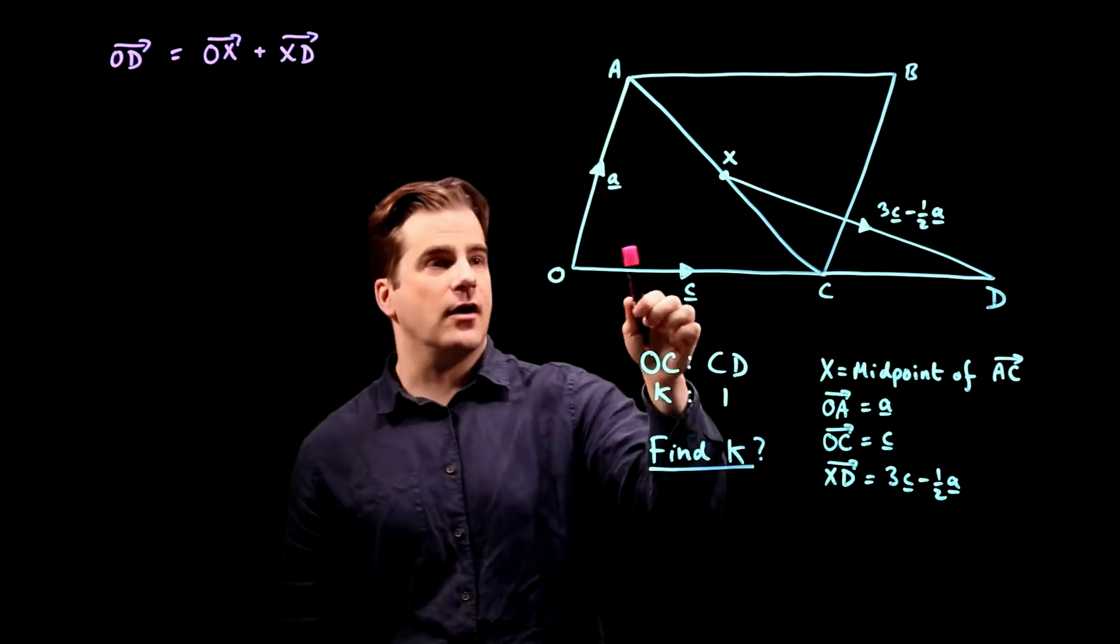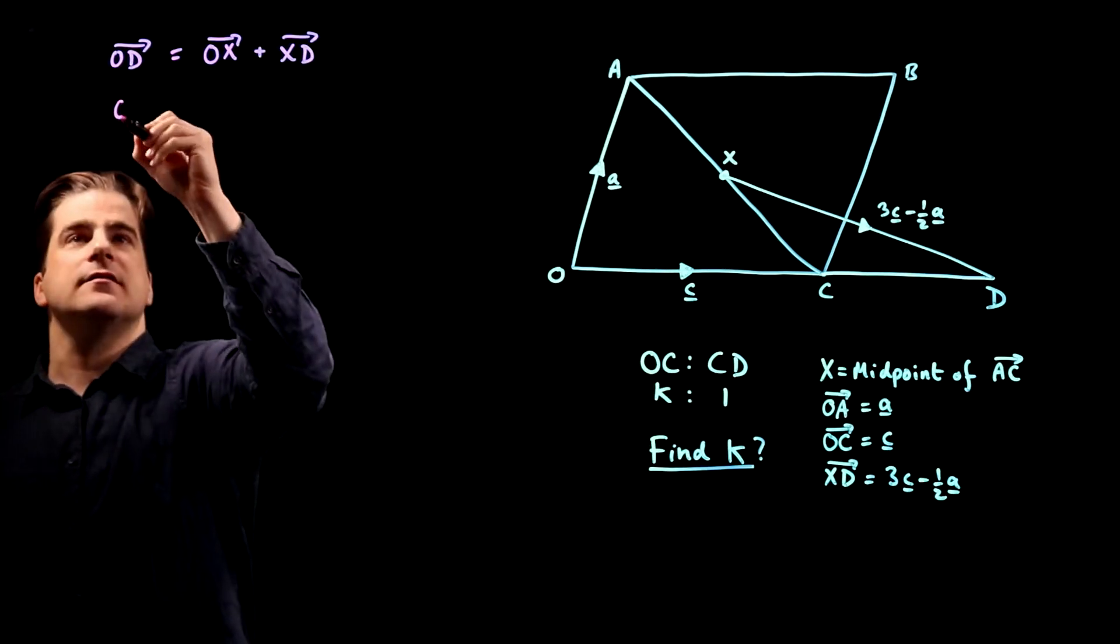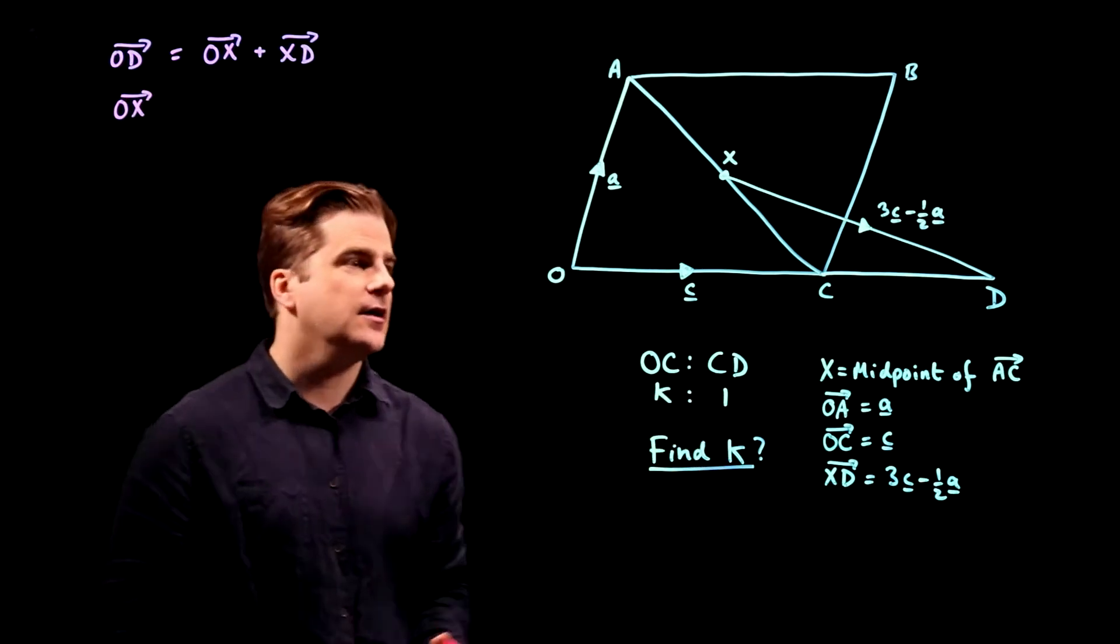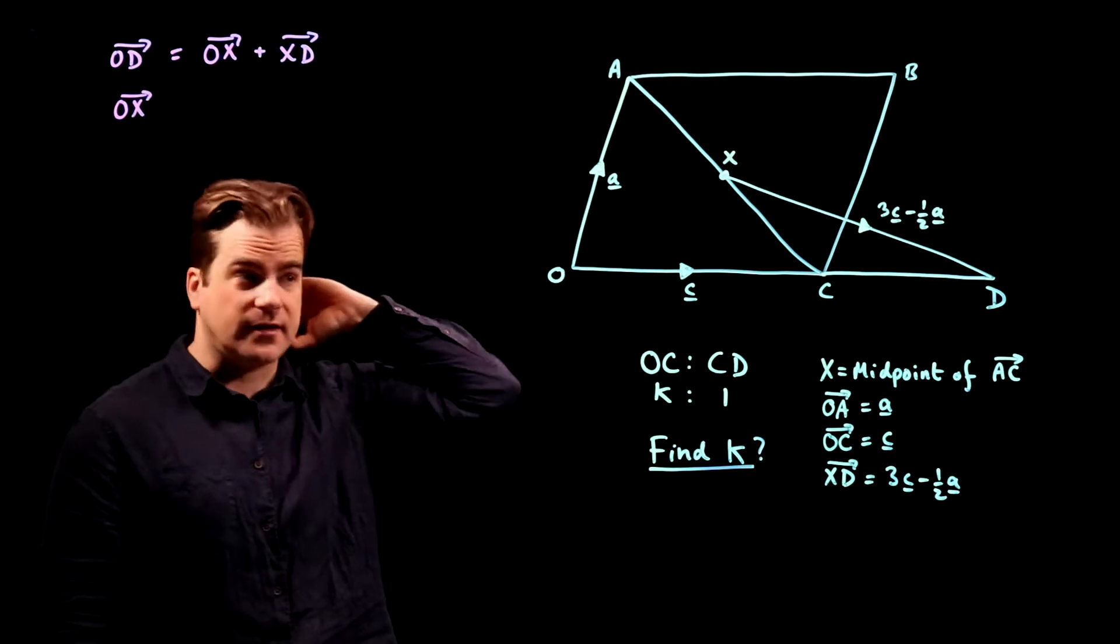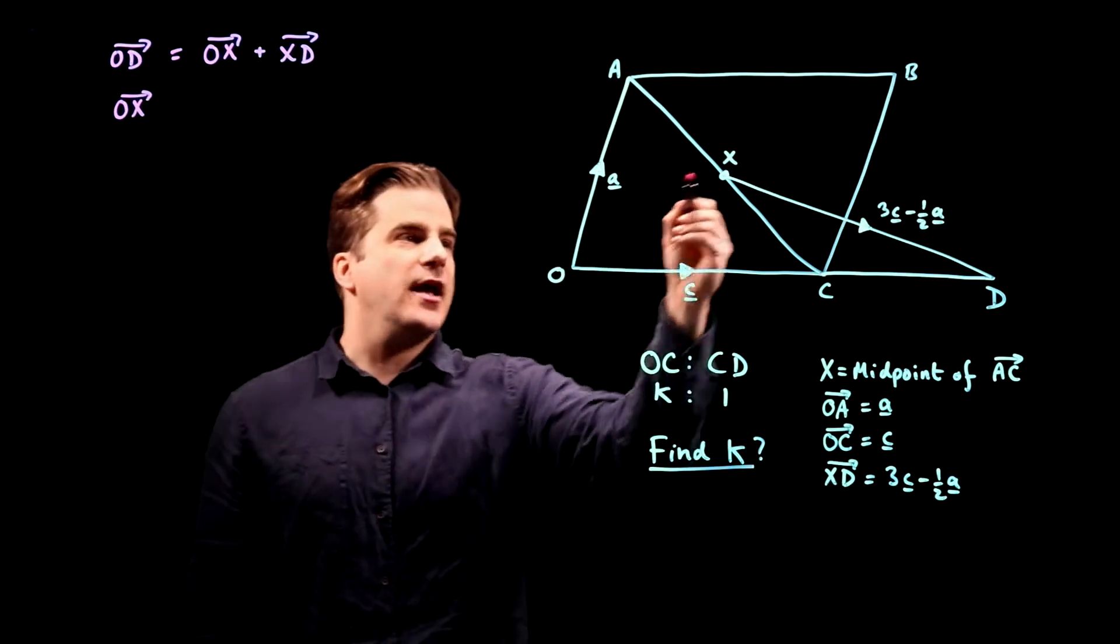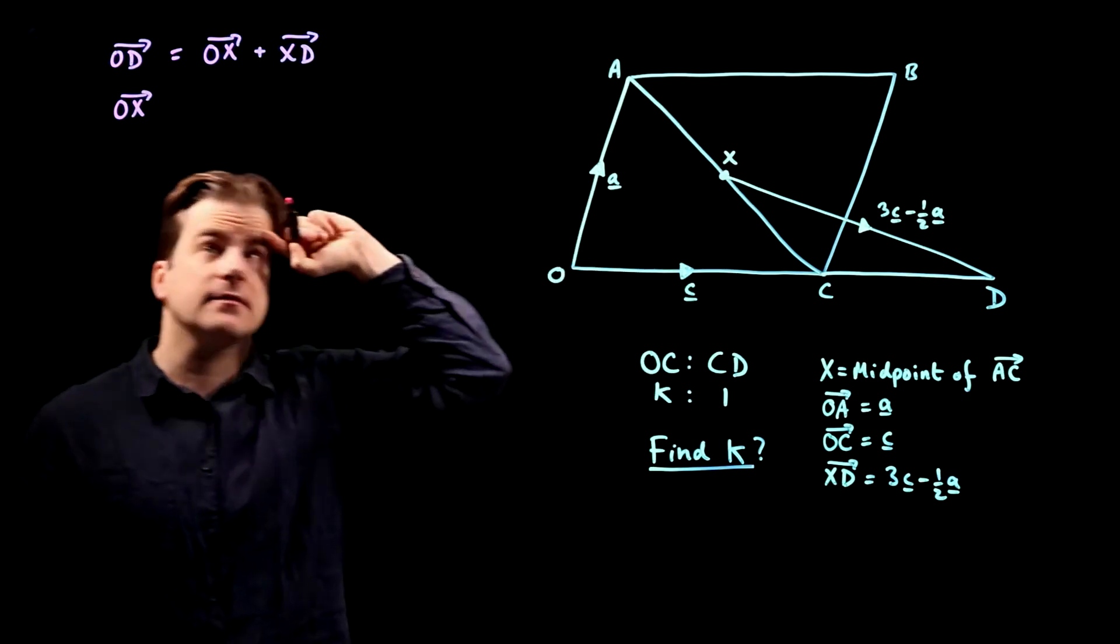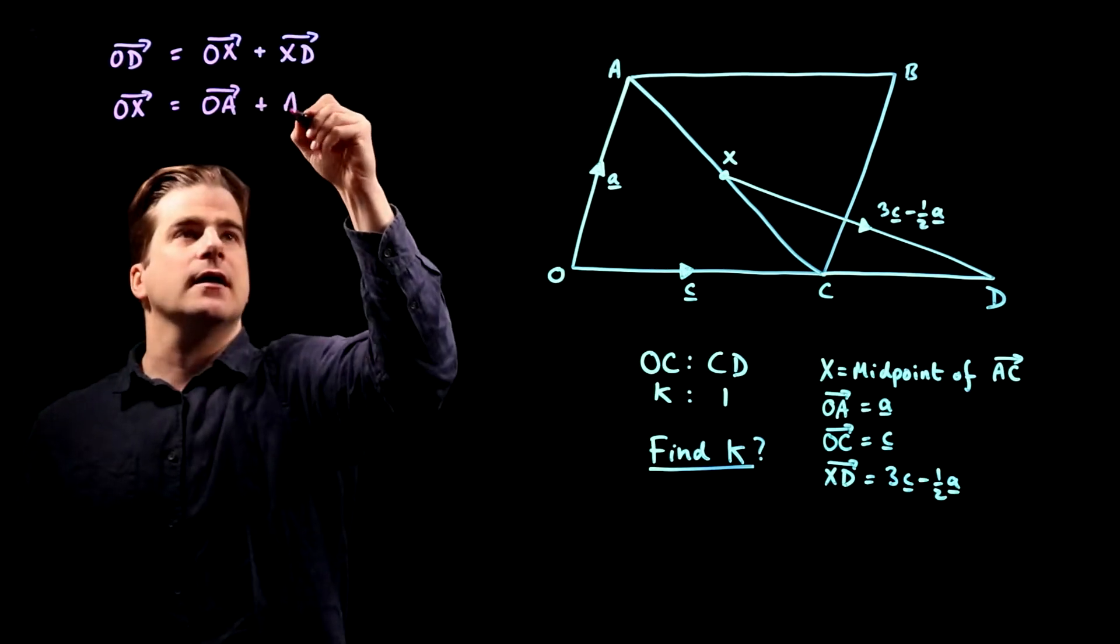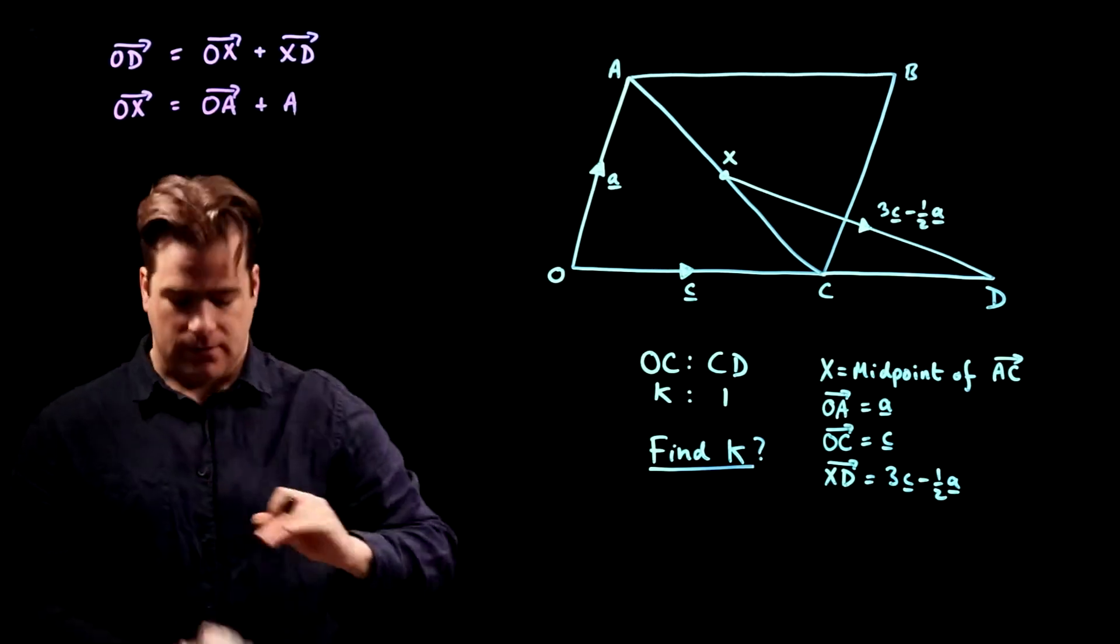Right, so we just need to find O to X. So what is O to X? And again, at this point, I don't really know where this is going. This is a tricky question. I'm just doing something. That's really important. And even if you don't get the answer, you will get some marks for trying something. So O to X. Well, O to X is O to A plus A to X.